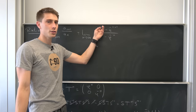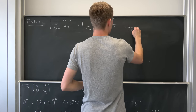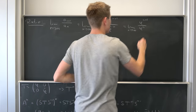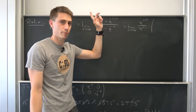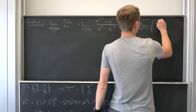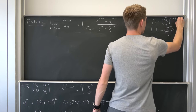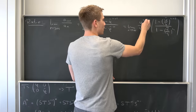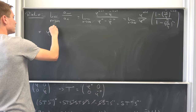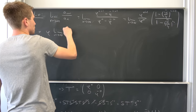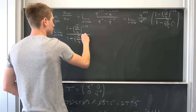Calculating the limiting ratio: we take the limit as n approaches infinity of a_{n+1}/a_n. Factoring out phi^{n+1} in the numerator and phi^n in the denominator, we end up with the limit of phi * (1 - (phi_conjugate/phi)^{n+1}) / (1 - (phi_conjugate/phi)^n).